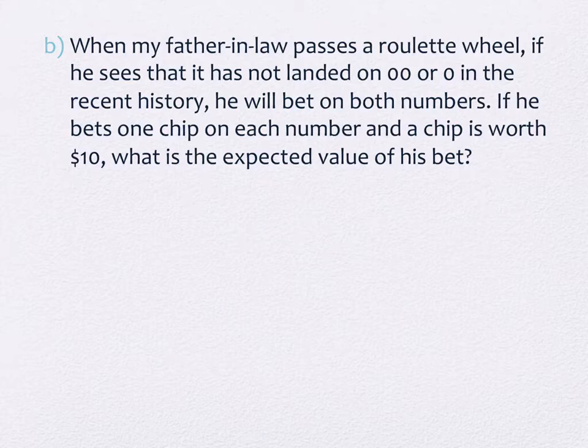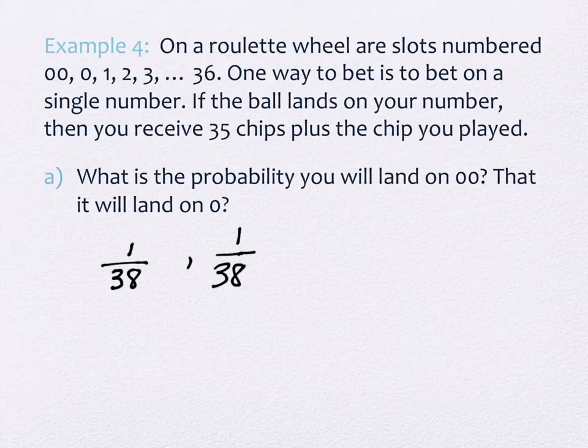So the next question is actually a true scenario. When my father-in-law passes by the roulette wheel, he looks at the board, and if the board does not show a zero or a double zero in the past however many spins, he decides he's going to bet on it. Because it's bound to turn up because it hasn't done so recently. There's some logic problem because these are supposed to be independent events. So what he does is he actually bets on both numbers.